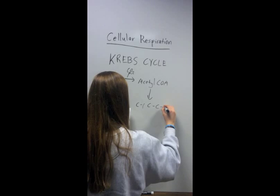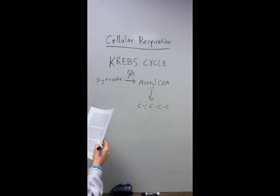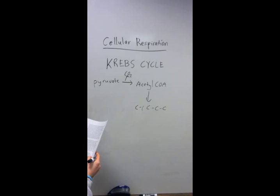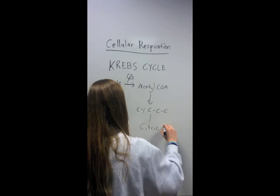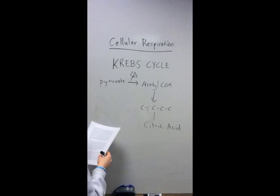The acetyl-CoA then merges with a four carbon molecule called oxaloacetate. This step is catalyzed by enzymes just like everything else that happens in the Krebs cycle. The merging of these two molecules produces a six carbon molecule called citric acid.